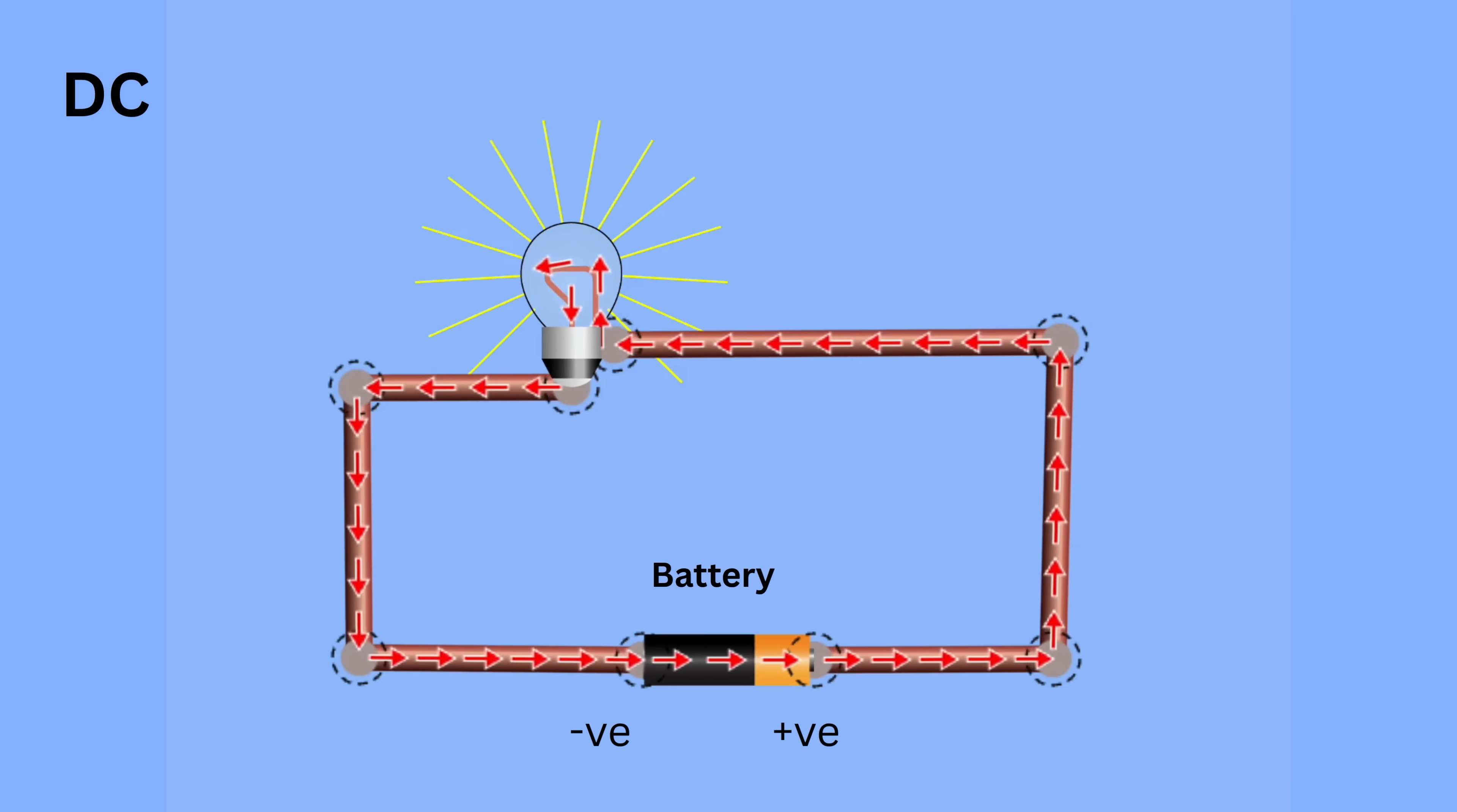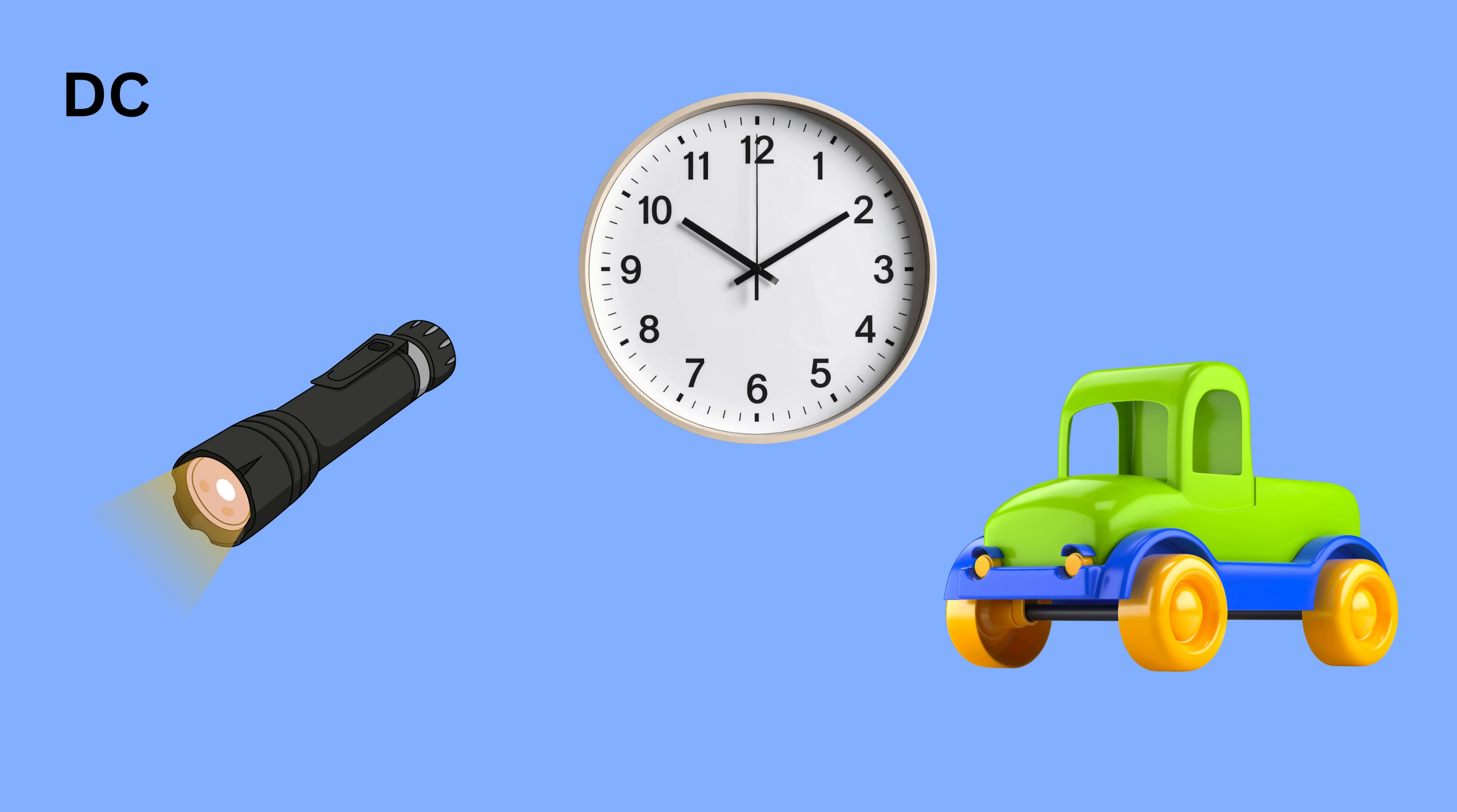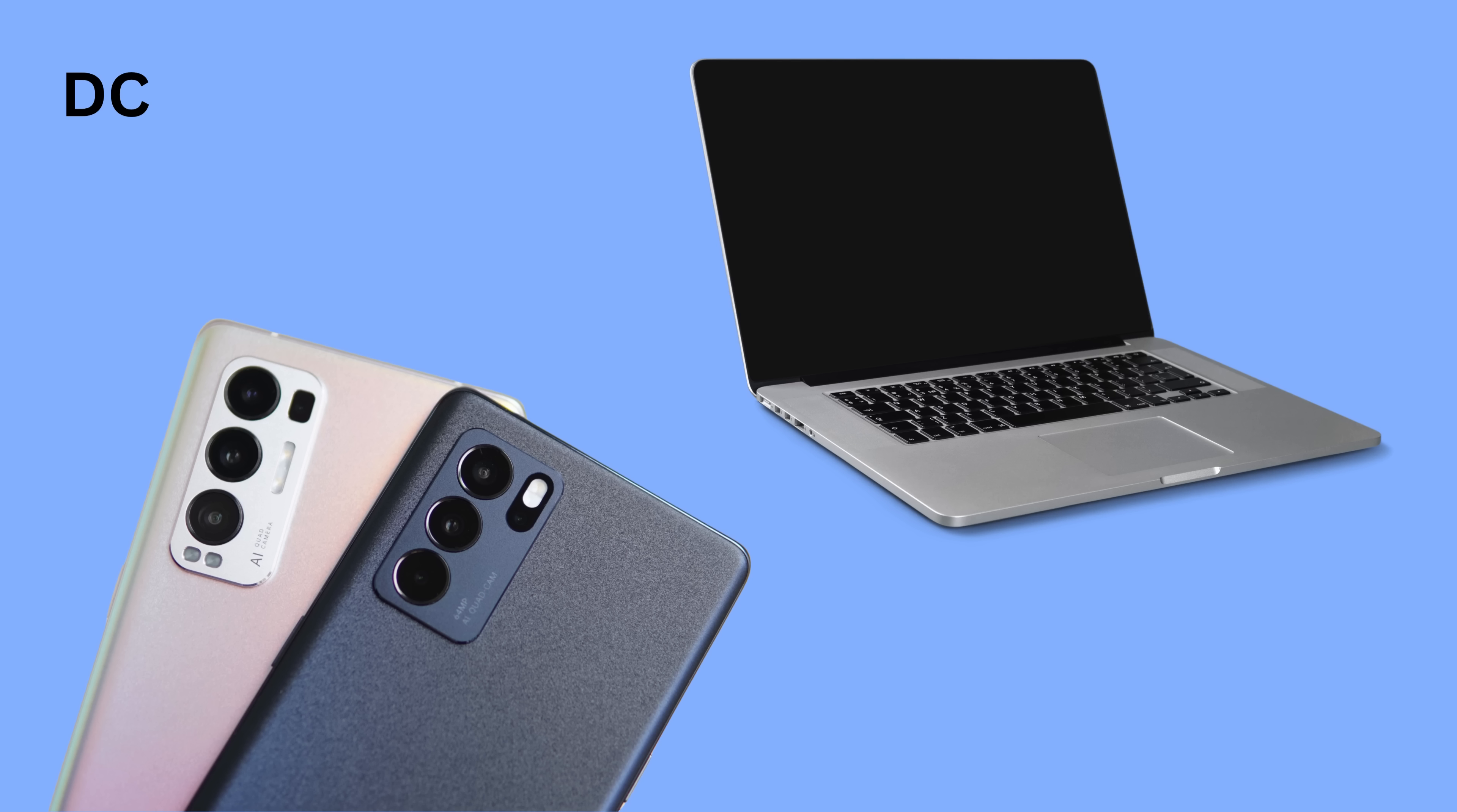A battery is the most common source of direct current. Devices like torches, wall clocks, toys, and TV remotes all work on this type of current. Another everyday DC example is mobile phones and laptops.